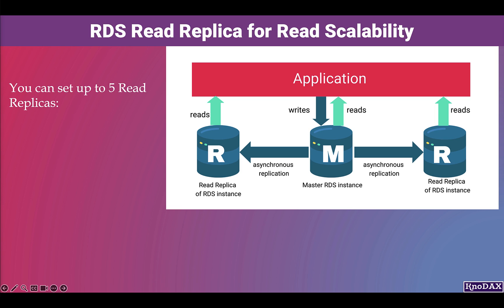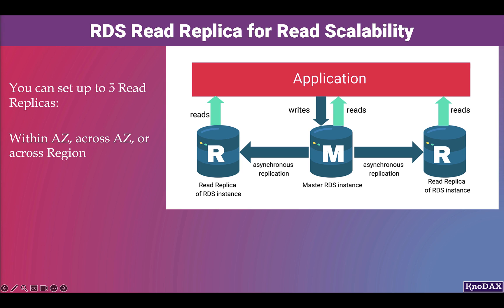In RDS, you have your primary or master database through which create, read, update, and delete operations are performed. In addition to the primary database, you can have read replicas to improve overall database performance — read replicas provide read scalability. Need more reads on your database? Add read replicas. You can set up to 5 read replicas, within an AZ, across AZs, or across regions.